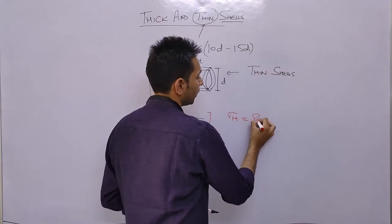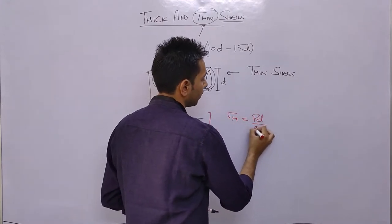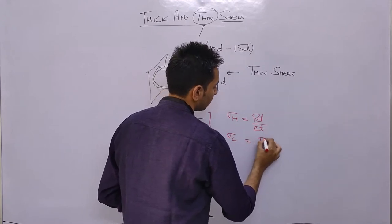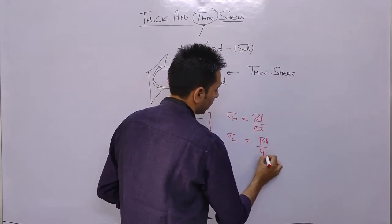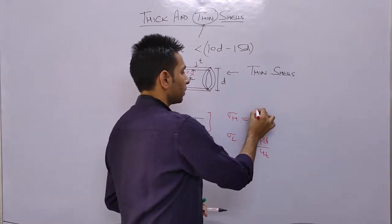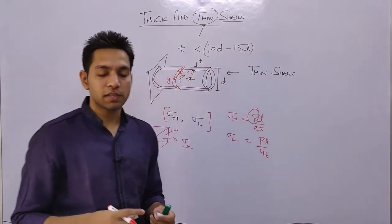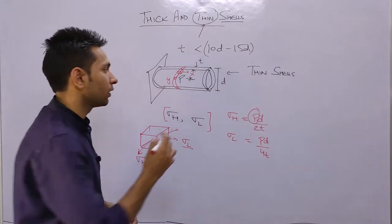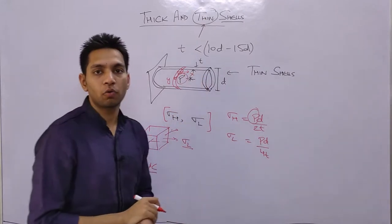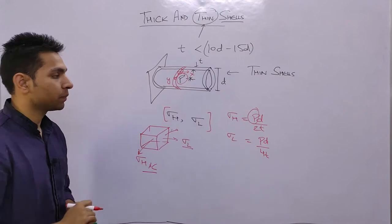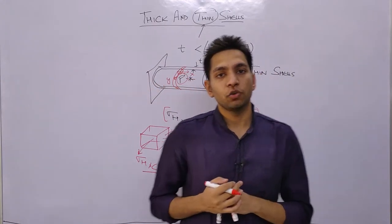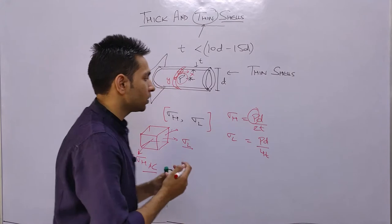The formulas are very straightforward. Hoop stress equals pd/2t, and longitudinal stress equals pd/4t, where p is the internal pressure acting inside the cylinder. You will be asked to find the values of sigma hoop and sigma longitudinal.